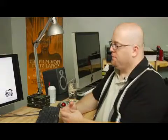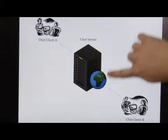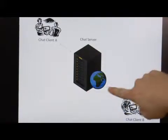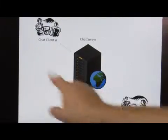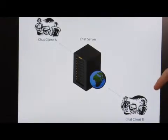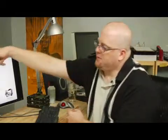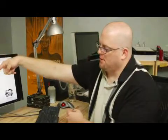You have a chat server, represented here by this black box, and hey, check it out — it's the earth. And then here you are, chat client A, and here's your friend in New Zealand, chat client B. So you type a message, it gets sent to this chat server, and then it gets relayed to chat client B, which is your friend in New Zealand.